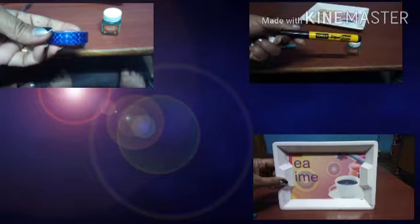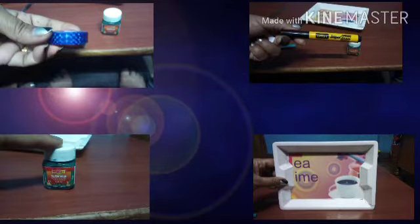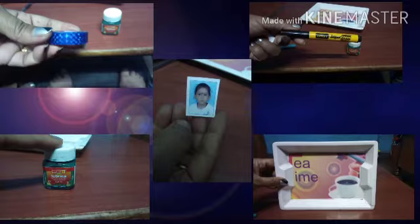For this activity we need some materials like color cello tape, small tray, sketch pen, fabric color, and your passport size photo.